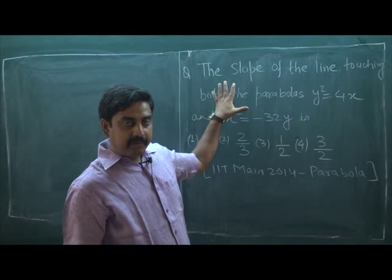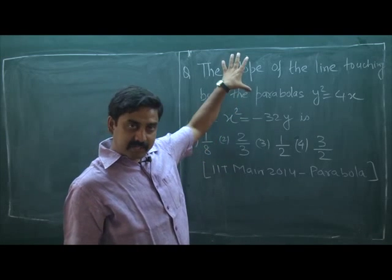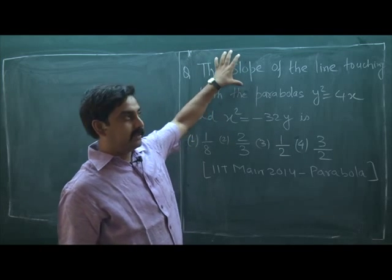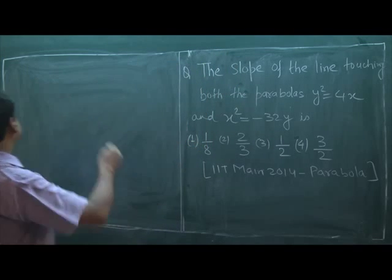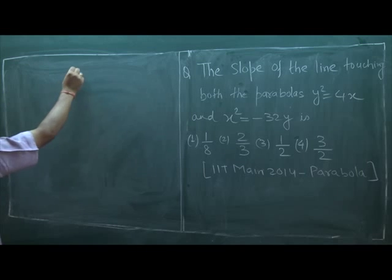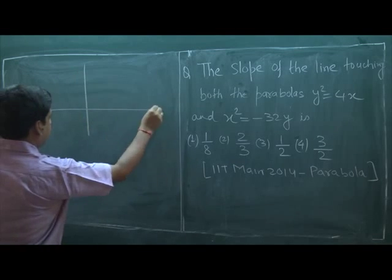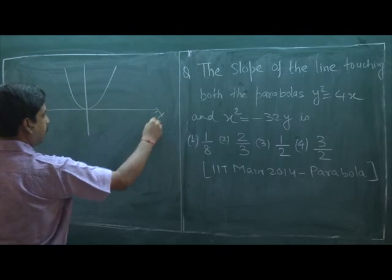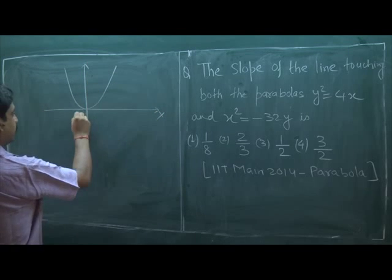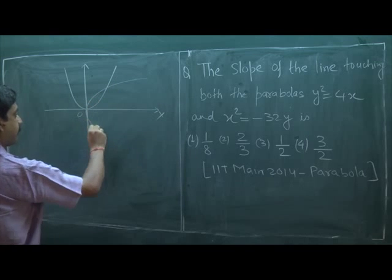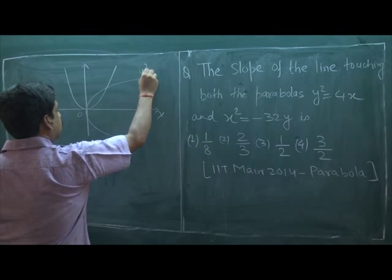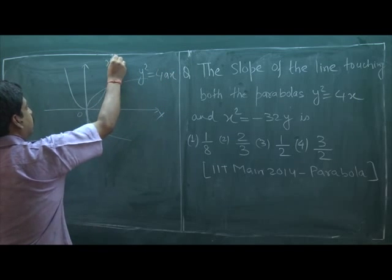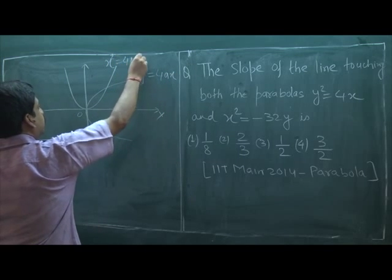This is a tricky question. For such kind of question we must know two additional pieces of information. If there are two parabolas — suppose on the x-y axis — this one is y² = 4x and this one is x² = 4by.